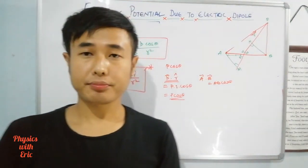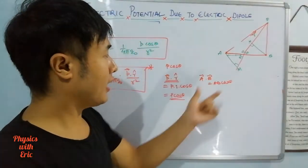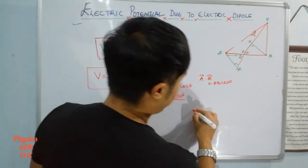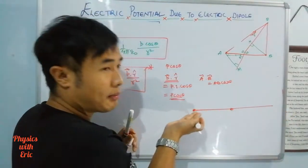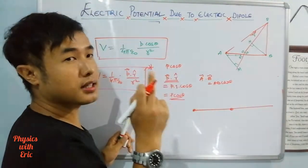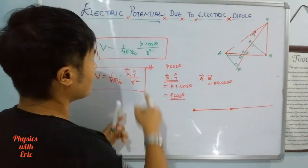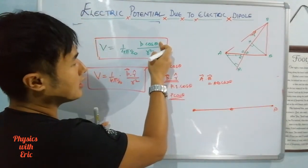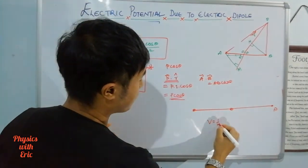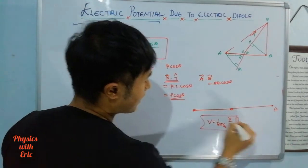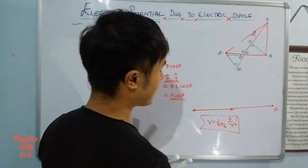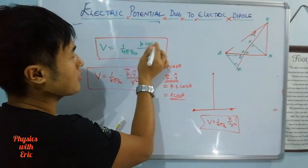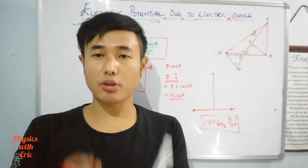Now let's look at important special cases for electric potential due to an electric dipole. Case one: when theta equals 0 degrees, cos theta equals 1, so V equals 1 by 4 pi epsilon naught times P by r squared. This is the potential at a point on the axial line. Case two: at the equatorial point, theta is 90 degrees and cos theta equals 0, so the electric potential at the equatorial point is zero.